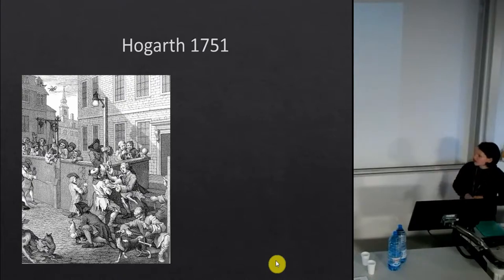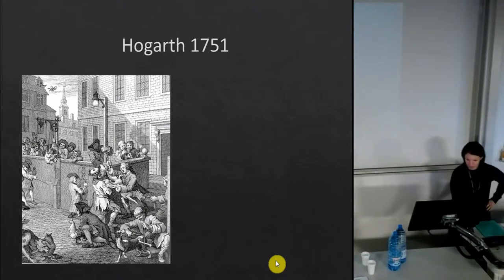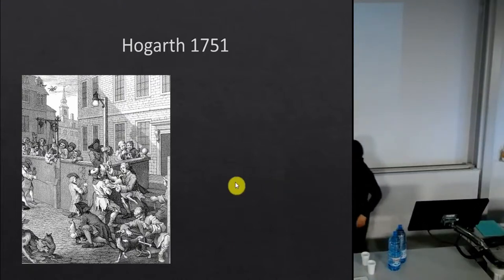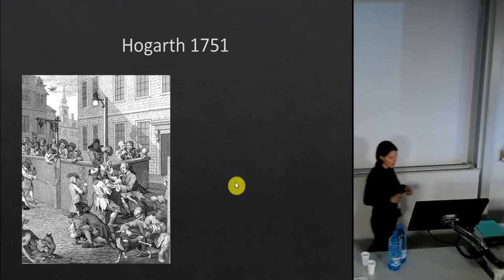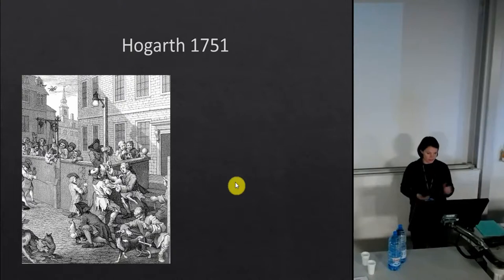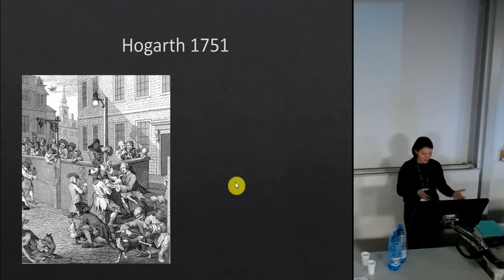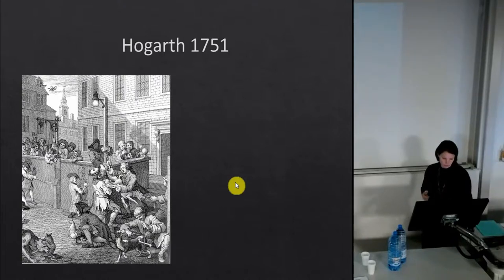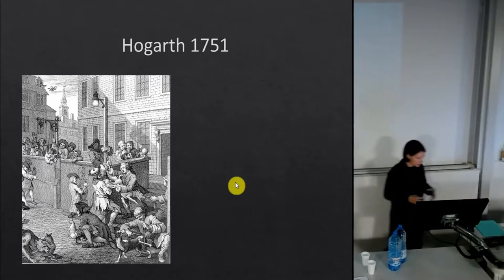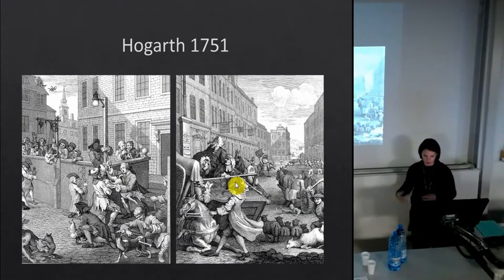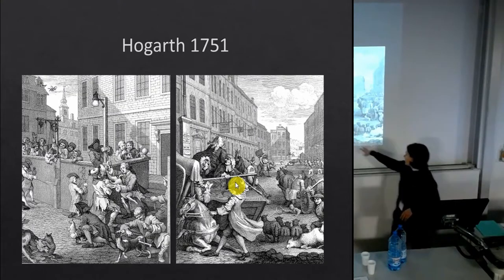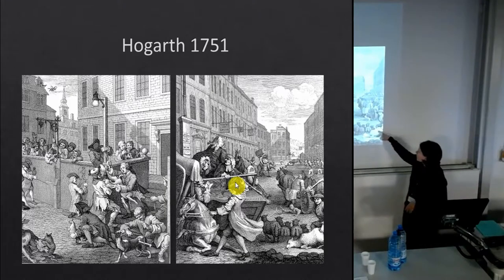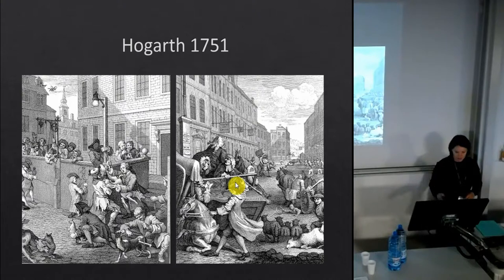He liked to do these social commentaries, and this one is very interesting for us. As you can see, this poor unfortunate dog is not having a very good time, and other animals are being taunted and treated very badly. Hogarth is observing all these things happening in 18th-century London. The protagonist, Tom Nero, starts out torturing a dog, then moves through life beating a horse, with sheep being beaten and even young children being run over in the street.